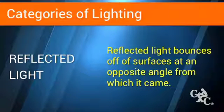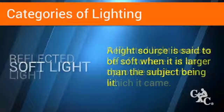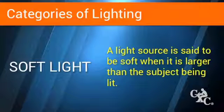Reflected light bounces off of surfaces at an opposite angle to which it came. This can be quite useful if you use a reflector to light a subject not facing the light source. A light source is said to be soft when it is larger than the subject being lit. The light is diffused and has soft edges and shadows. Soft light enhances portraits by lessening minor imperfections.